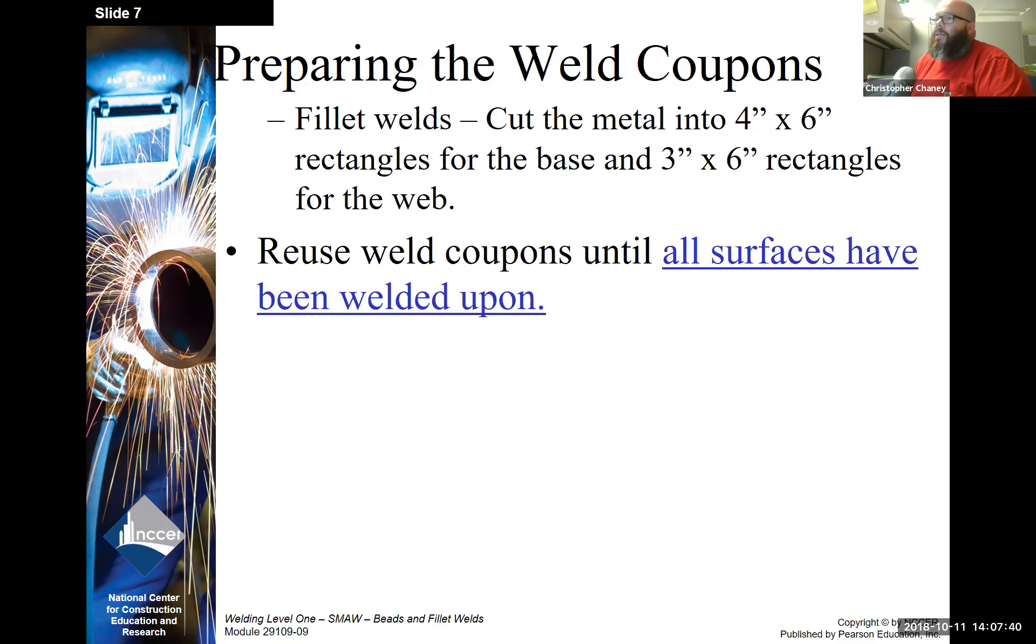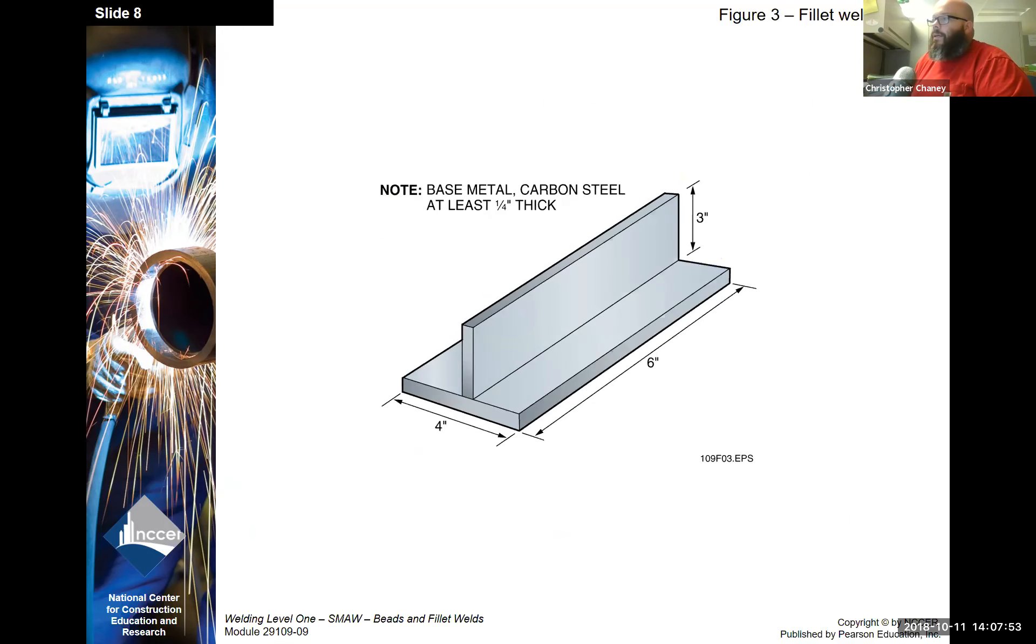Preparing the weld coupons for fillet welds. Cut material into four by six rectangles for the base and three by six rectangles for the web. Reuse weld coupons until all surfaces have been welded upon. Here's an example of the fillet weld coupons as they're set up prior to welding.